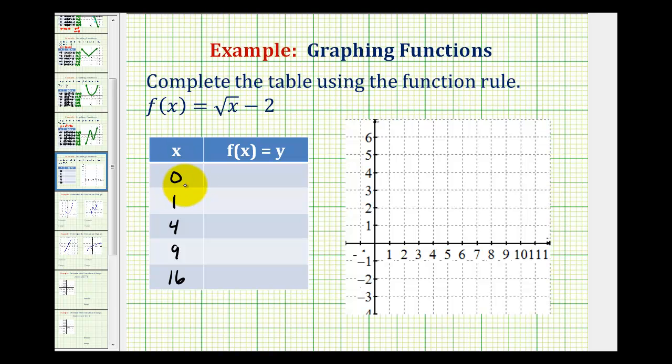So when x is equal to zero, to determine the corresponding function value or y value, we'll substitute zero for x. So we'll have the square root of zero minus two. Well, the square root of zero is zero. Zero minus two is negative two. So this tells us the function contains the point with an x-coordinate of zero and a y-coordinate of negative two.